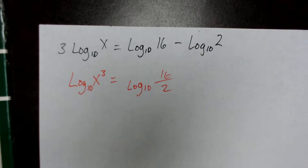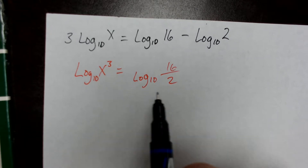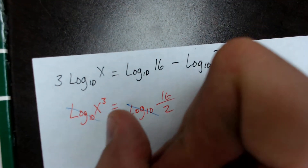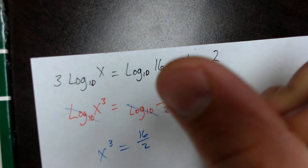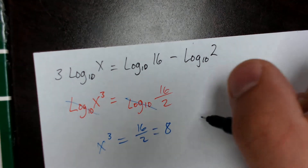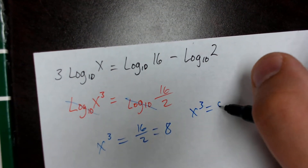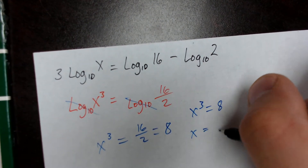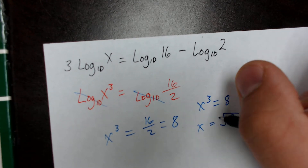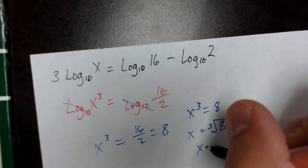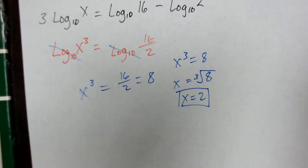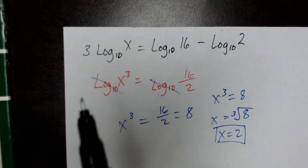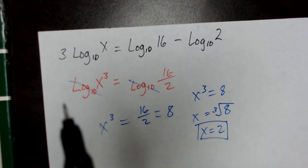The next rule is: when both sides of an equation are written as logarithms on the same base, we can eliminate the logarithms. So x cubed equals 16 over 2, which equals 8. If x cubed equals 8, then x equals the cubed root of 8, which is 2. No new rules are being learned here — we're just combining two different rules into one problem.